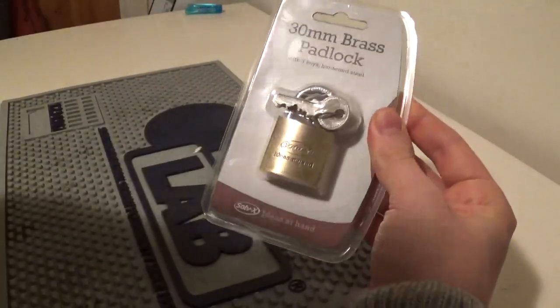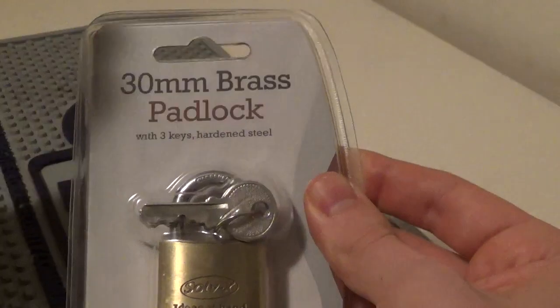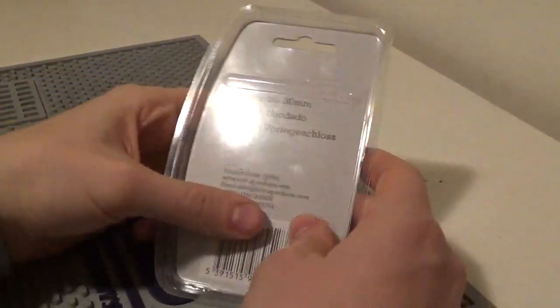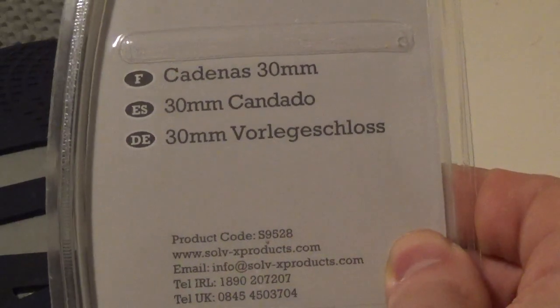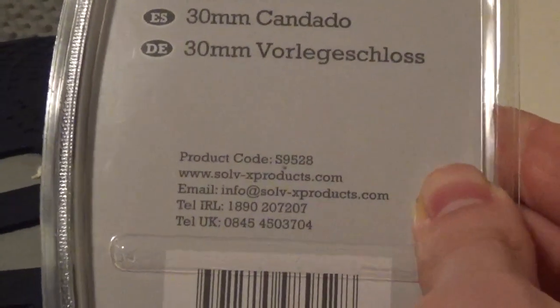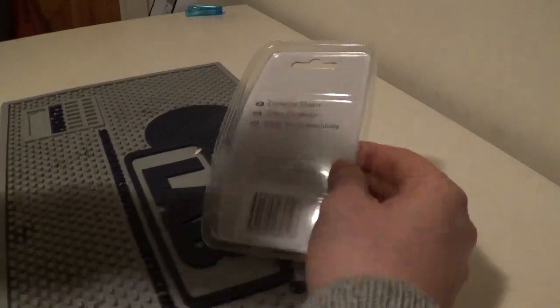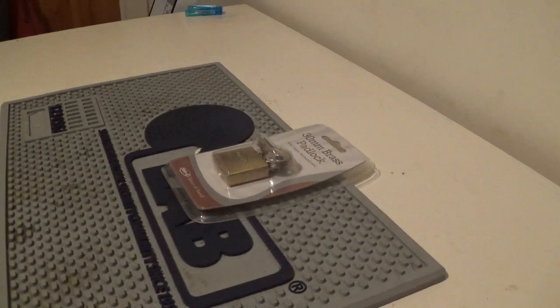We can see this is hardened steel, it doesn't say what is hardened steel but I presume they mean the shackle. We can see I tried to get a decent bitting there, little five pinner so trying to give it the best chance we can. On the back there it's got French, Spanish and German. I think it just says 30 millimeter padlock. Lock itself cost five pounds or euros or whatever your currency, dollars, so we don't need to expect too much.